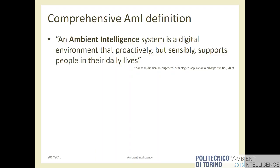The shortest definition that captures the core of what we want to do is a three-line definition by Diane Cook from 2009: an intelligent system — a system specifically, not just a device or application or interface, but a system composed of many different parts — that is a digital environment. We don't focus on the devices; we focus on the environment.